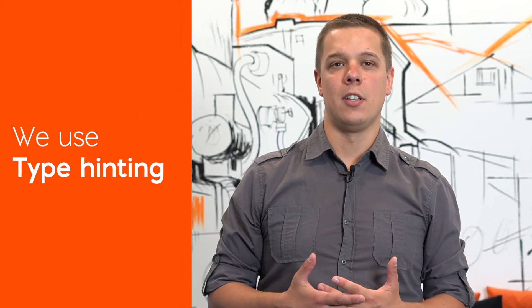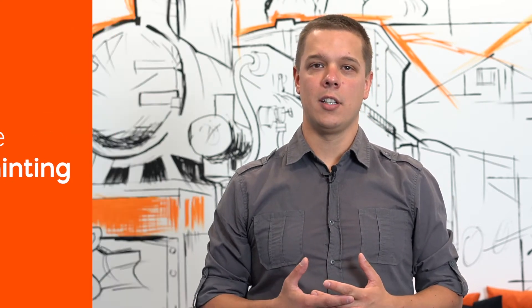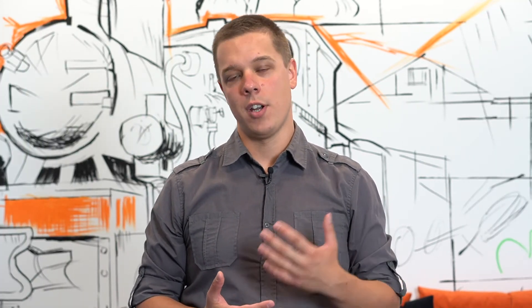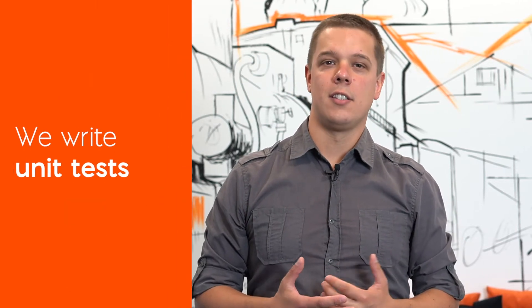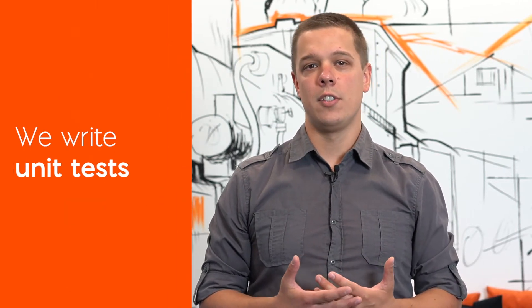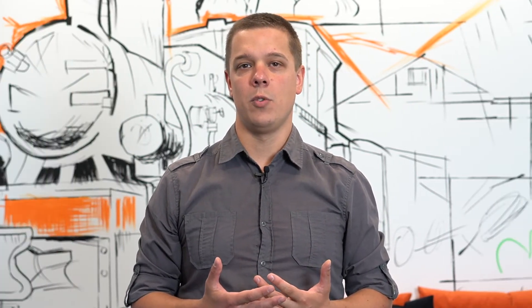We use type hinting whenever we can. It enables us to detect a lot of mistakes before even running the code. We write unit tests. This helps us to avoid situations in which we say, but that worked just an hour ago.